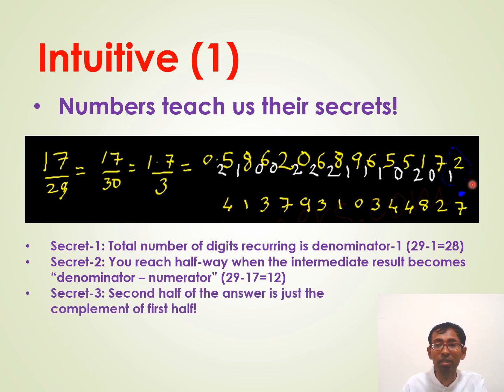And the third secret is, if you see these twenty-eight digits of answers, the yellow ones, are arranged in two rows of fourteen digits. If you see them, they all add up to nine. That means, if you get the first half of the answer, you can get the second half of the answer just by subtracting all the digits from nine.